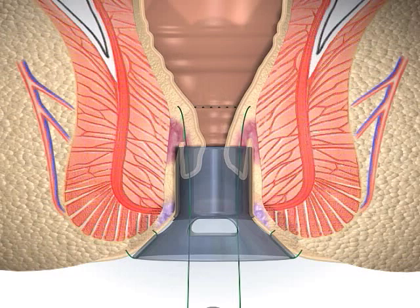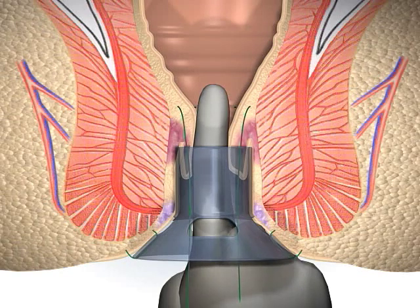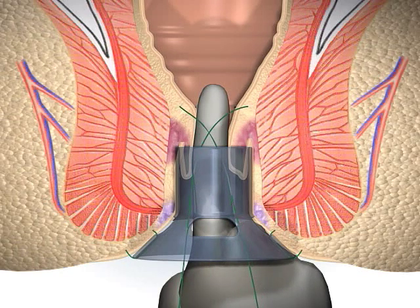A finger is placed in the anus, and the purse string is tightened to check for a uniform circumferential closing with no skips or gaps.